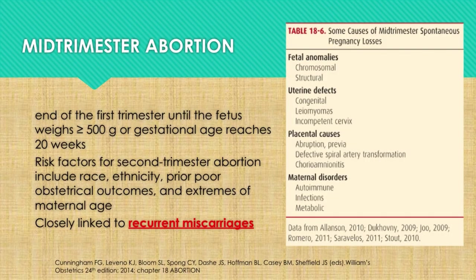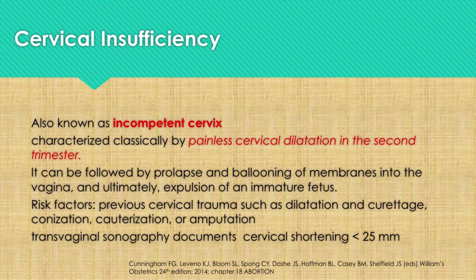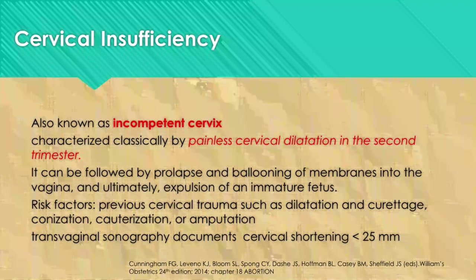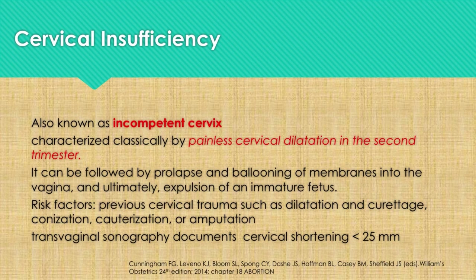For mid-trimester abortion, this is end of the first trimester until the fetus weighs about 500 grams or gestational age reaches 20 weeks. Risk factors for second trimester abortion include race, ethnicity, prior poor obstetrical outcomes, and extremes of maternal age. Mid-trimester abortion is closely linked to recurrent miscarriages.